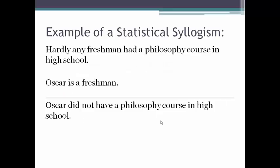Let's take a look at an example where that's the case: Hardly any freshman had a philosophy course in high school. Oscar is a freshman, therefore Oscar did not have a philosophy course in high school. The form is the same — we're talking about freshmen, a certain class of individuals, and their membership in another class: being the set of individuals who had a philosophy course in high school. Most freshmen are not members of this class. Then we pick out an individual, Oscar, and state that he is a member of the class of freshmen. So we conclude Oscar did not have a philosophy course in high school — it's unlikely, given that most freshmen, of which Oscar is one, didn't have philosophy courses in high school.